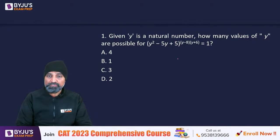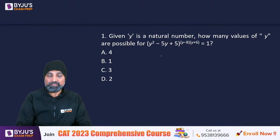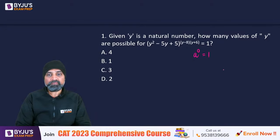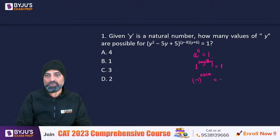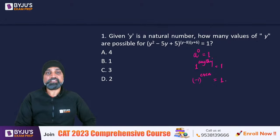If the overall value of something equals 1, it means it is of the form: some number to the power 0 equals 1, or 1 to the power of some number — since 1 to the power of anything gives us 1. And then minus 1 to an even power also gives us 1. These are the three cases where we get overall value 1 when exponents are involved.